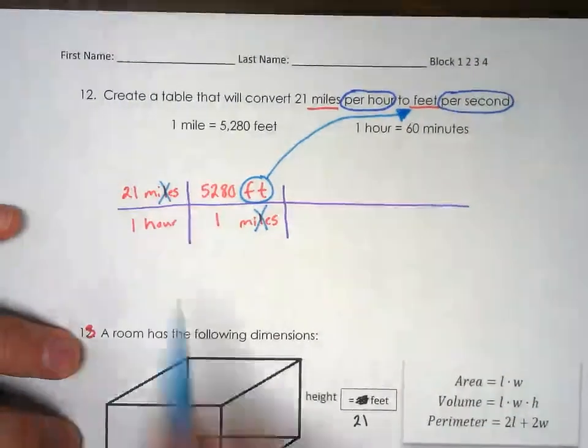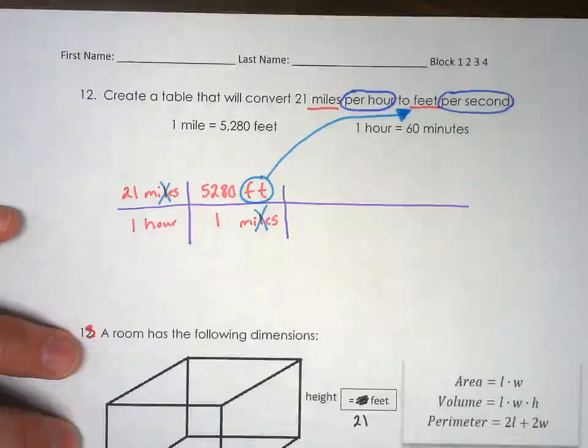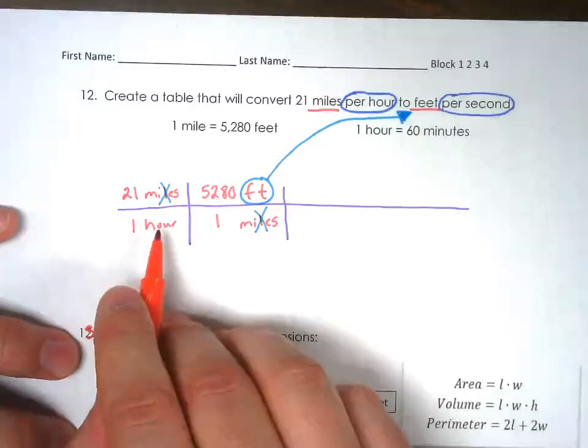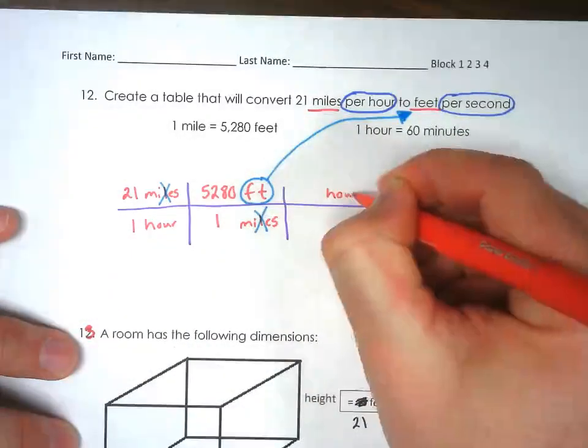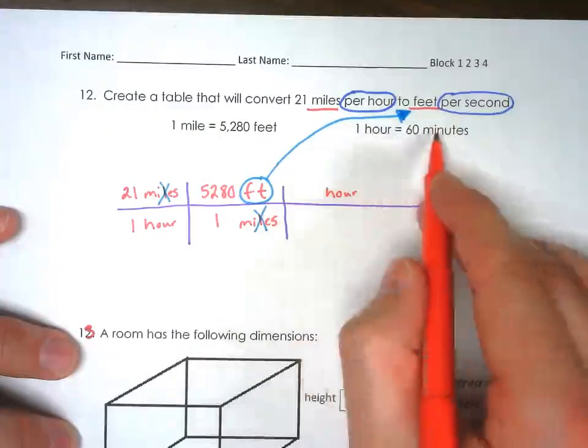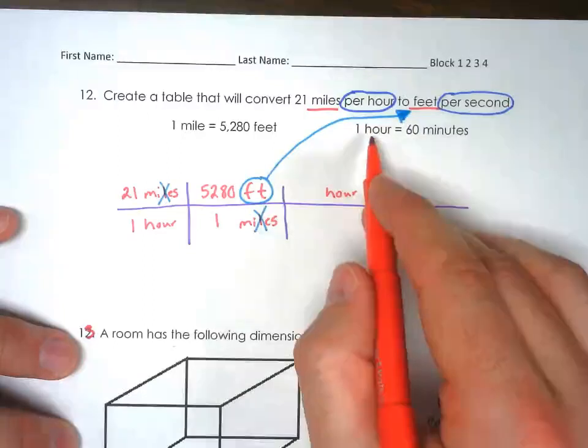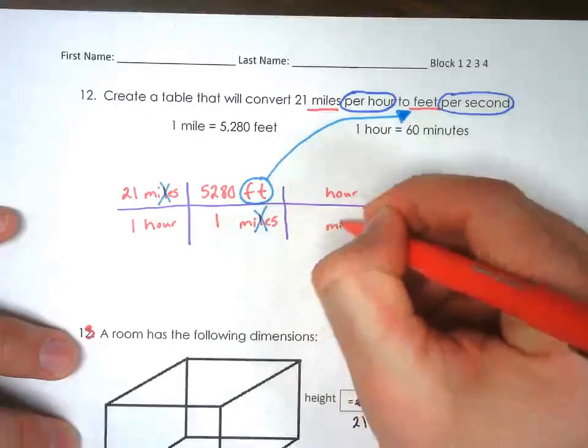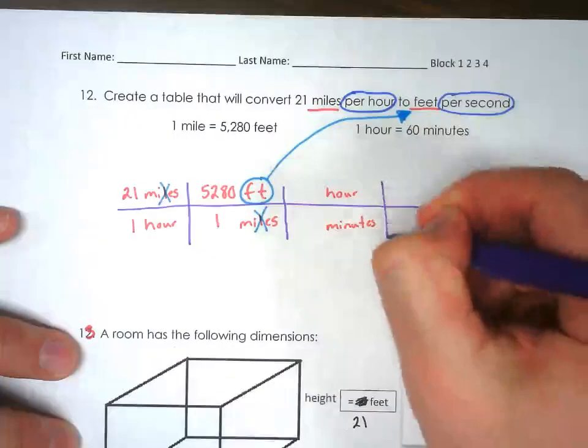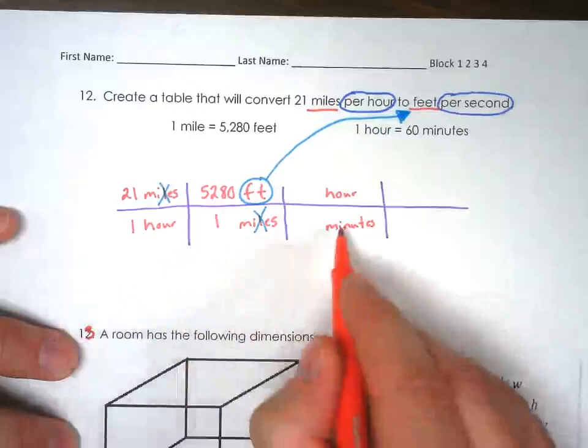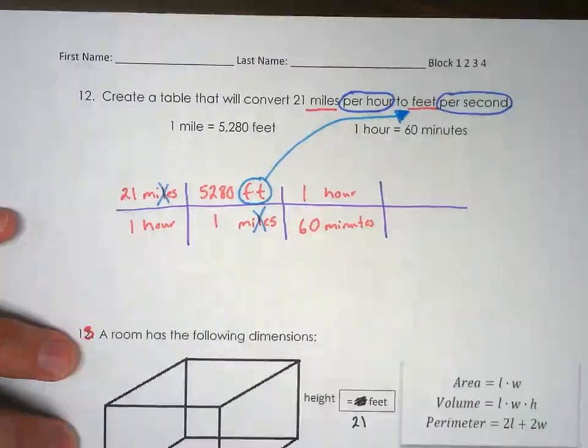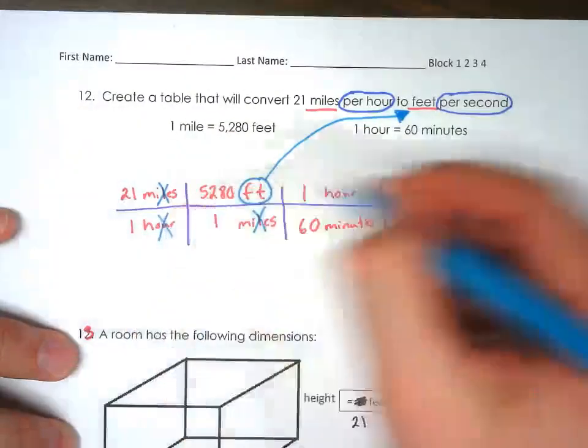Now we have feet. Let's deal with the hour because we have to change our hours. If hours is on the bottom, how do we get rid of hours? It has to be on the top. It has hours to minutes, but we're trying to go to seconds. They don't have to give us all the conversions, but we can go from hours to minutes and figure it out from there. How many minutes are in an hour? It tells you right there: 60 minutes are in one hour. So the hours cross out.